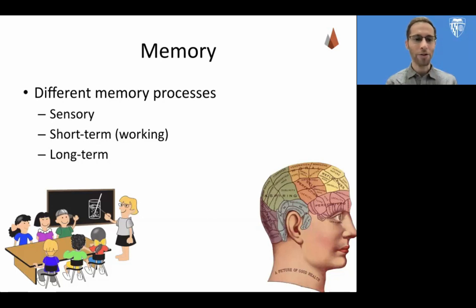Thinking back to the sensory example of the image that gets shown and then removed — if someone were to ask you 30 minutes from now what the image was, you won't have the exact image in your perceptual field, but you can probably recall it by conjuring the image internally as part of your memory. But you won't remember it 10 years from now. And that's the real difference between short-term and long-term memory.